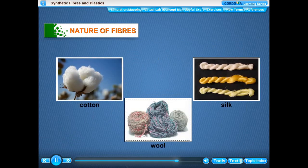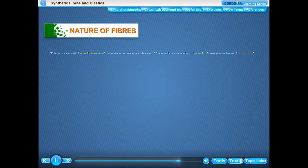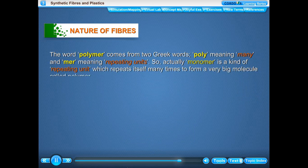So cotton, wool, silk, etc. are natural polymers. The word polymer comes from two Greek words: 'poly' meaning 'many' and 'mer' meaning 'repeating units'. So actually, monomer is a kind of repeating unit which repeats itself many times to form a very big molecule called polymer.